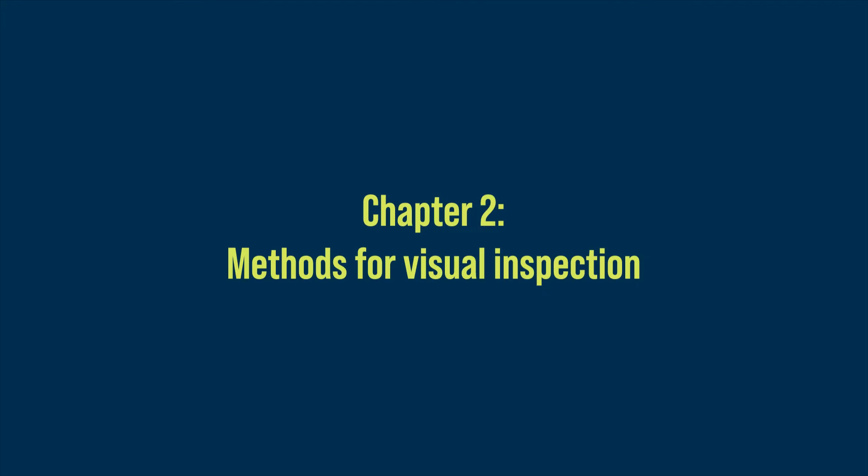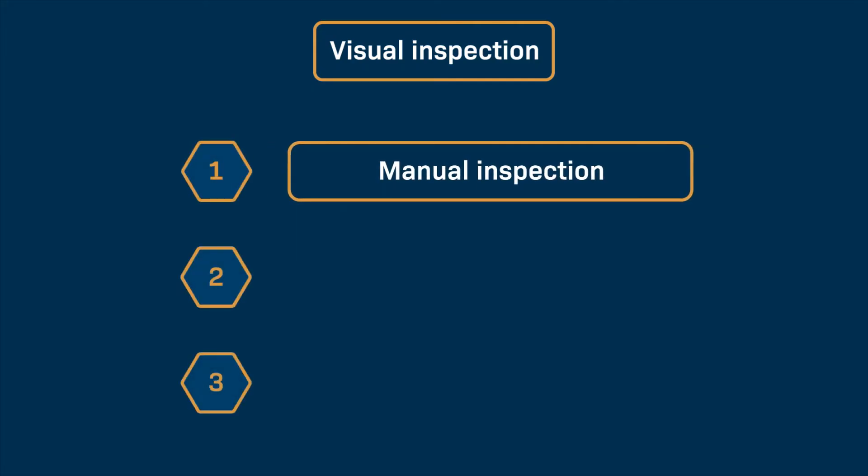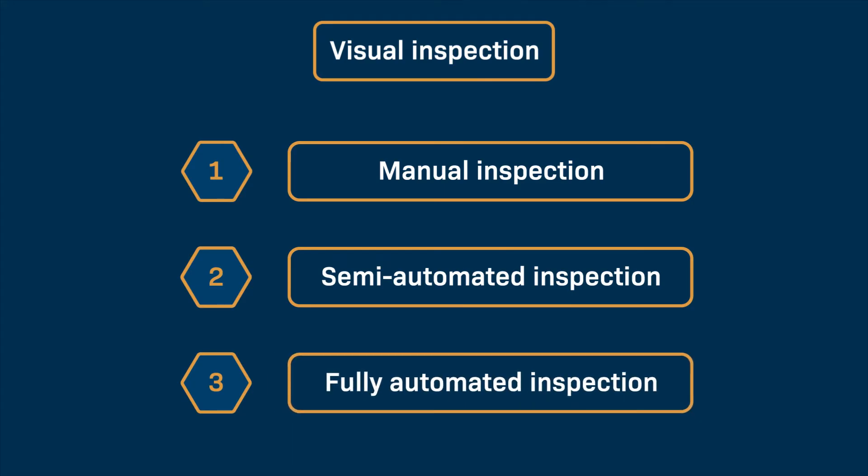Chapter 2: Methods for Visual Inspection. The visual inspection process is performed by using one of three methods: manual inspection, semi-automated inspection, or fully-automated inspection.